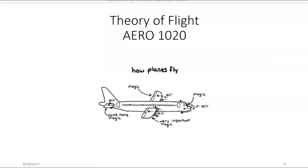Aero 1020 Theory of Flight is all about how airplanes fly. There's a joke in aviation that it's magic that causes an airplane to fly. As you can see in this illustration, there's some very important magic going on around the wings, some more magic going on around the tail of the aircraft, as well as at the engines. But it's a little bit more than magic that causes an airplane to fly. In Aero 1020, you'll learn all about the math and the physics and the science that makes an airplane fly.